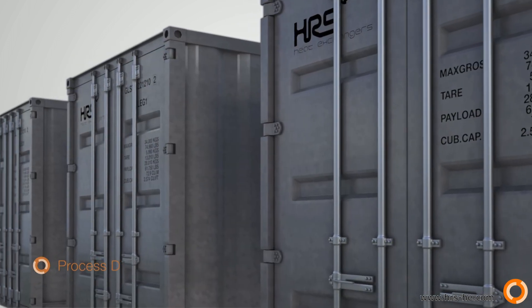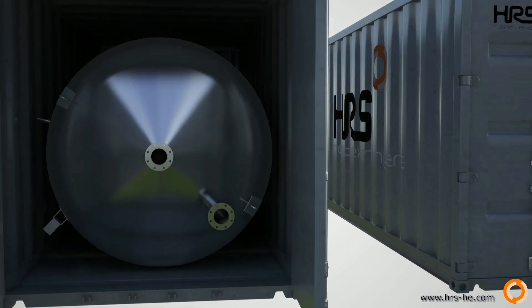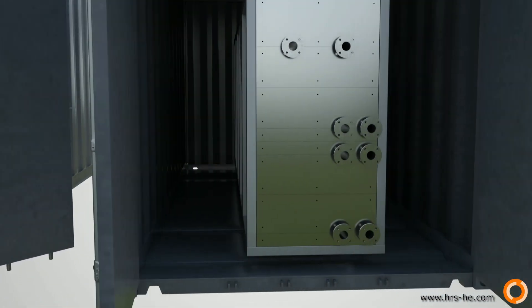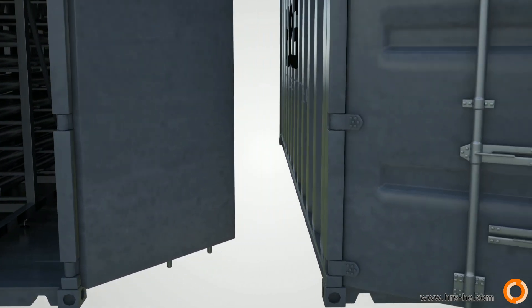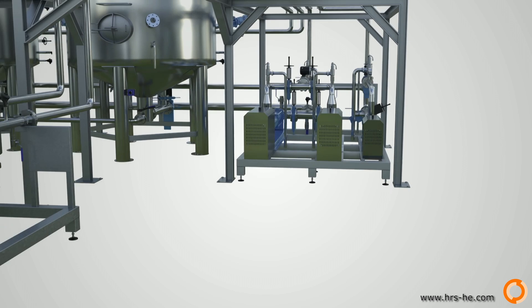The HRS sludge pasteurization process is a skid mounted system prefabricated in our workshops. These skids are shipped directly to the installation site. This way, the time needed for installing the process is reduced considerably.